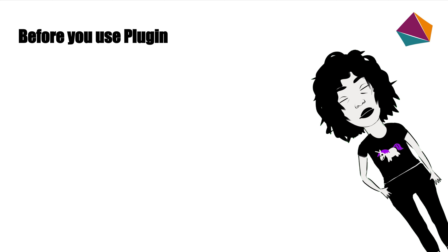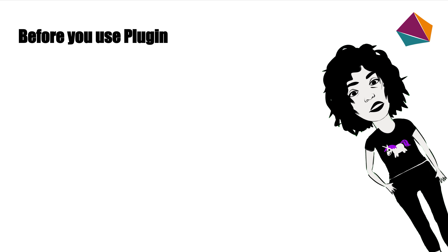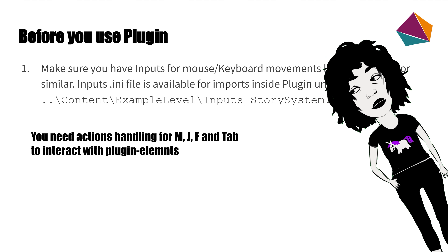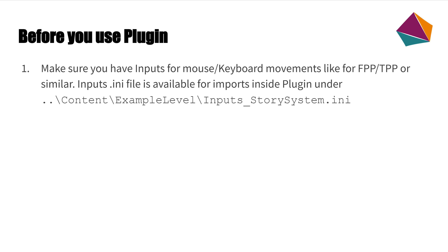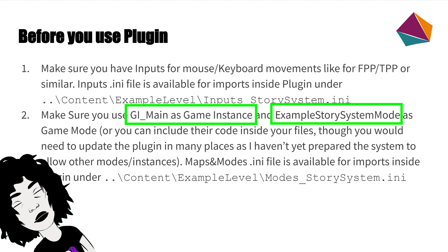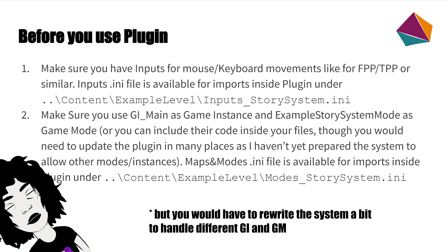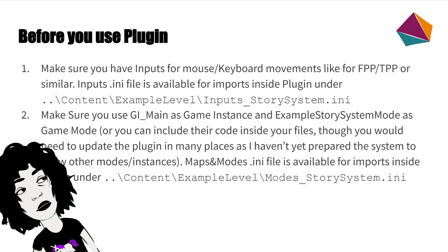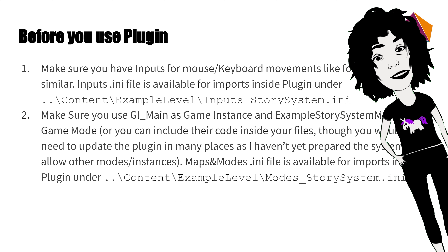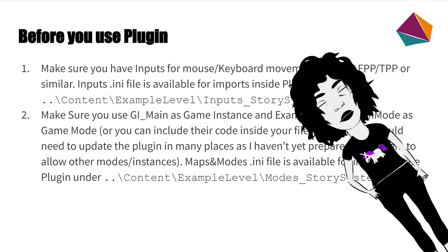Before you use the plugin, first of all just download the data, scan for viruses — never download things from the internet without scanning for viruses — and put it into your plugin folder. It will work if you make sure that you use inputs for keyboard and mouse like in a third-person perspective game. Most importantly, make sure that the game instance is GI Main and game mode is Example Story System Mode, or at least that your files contain the code of those elements. The system is not very flexible right now — you cannot just change the player pawn and expect everything to work fine. You would have to rewrite the system a little bit to allow yourself to use different modes and instances.